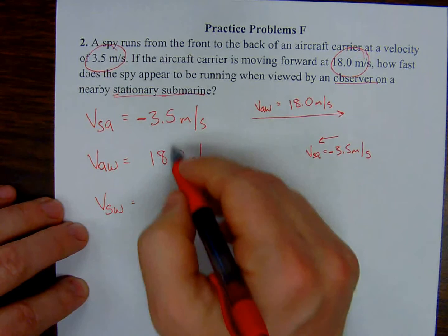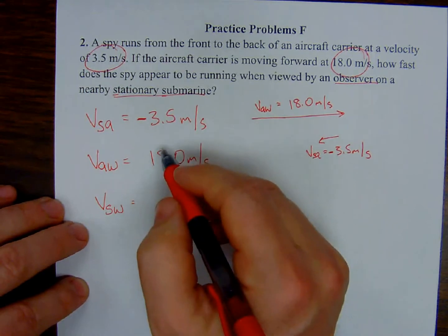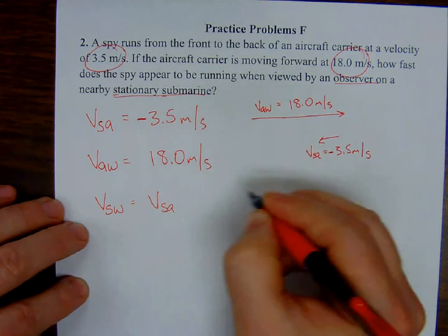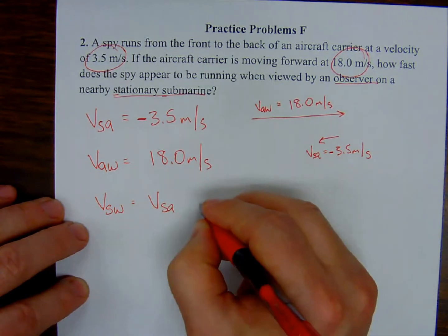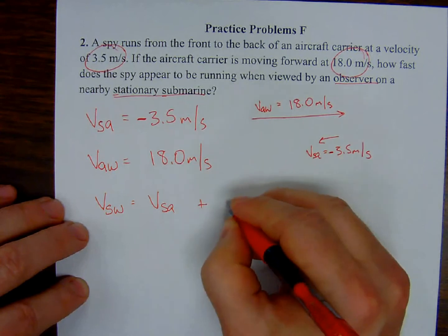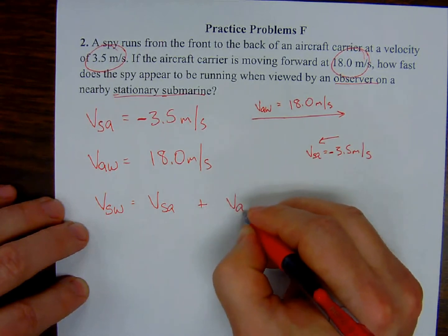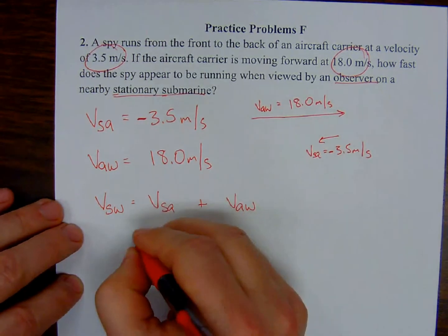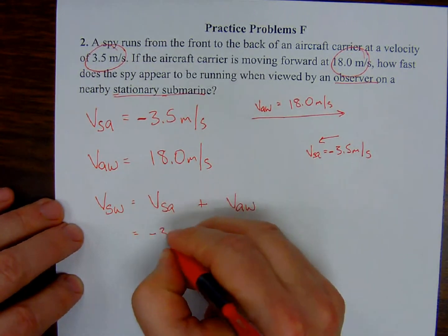Negative 3.5 meters per second plus 18.0 meters per second. And that ends up being, because math is hard, 14.5 meters per second.